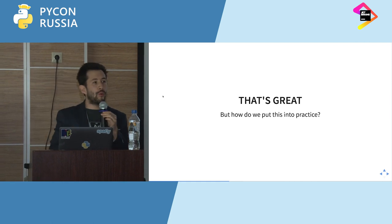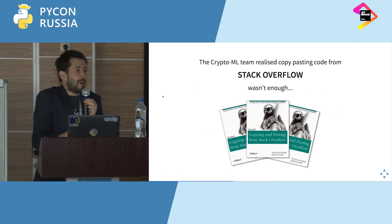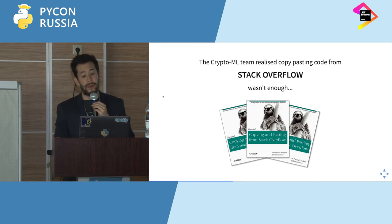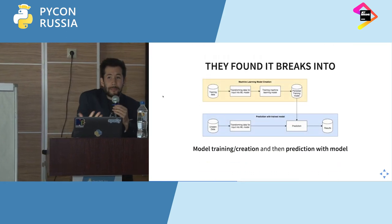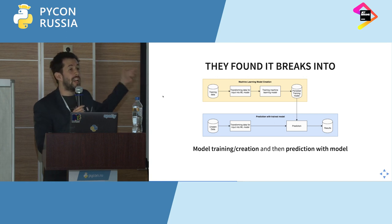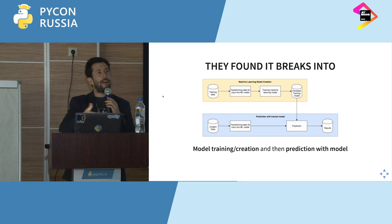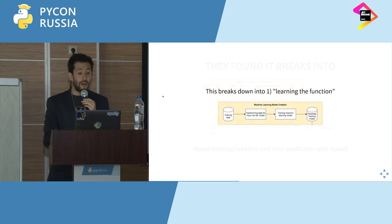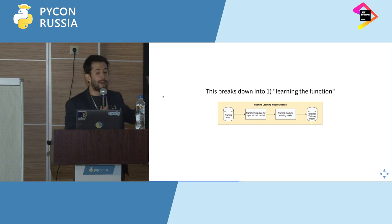This is the question of going from reading a tutorial to actually implementing it — this is where we jump into actual machine learning pipelines. The CryptoML team realized they couldn't continue copy-pasting code from Stack Overflow; they needed proper methodology. They found that machine learning pipelines break down into two different workflows: first, creating your model — the training, learning a function, persisting it — and then actually using that function to predict new data. For the training part, you go through these generic steps: finding training and test data, transforming the input into a suitable form for a specific model.